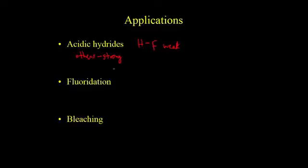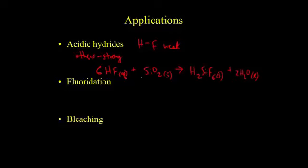For example, if we take HF in water and react it with silica, which is the main component of glass, it makes hydrofluorosilicic acid and water. This is how you make frosted glass.